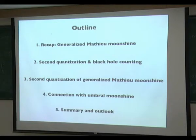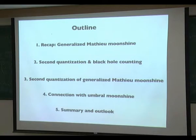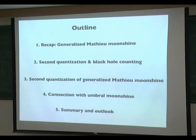The plan of this talk is to first do a recap, then talk about second quantization and black hole counting in string theory, then introduce the second quantized version of Mathieu moonshine. I also want to stress that there seems to be a certain overlap between generalized Mathieu moonshine and umbral moonshine that is not yet understood but points to interesting connections. I'll end with a summary and open questions.